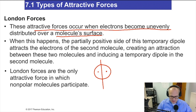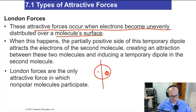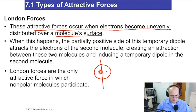Now remember, these electrons here are not stationary — they're constantly moving. This electron is here now; it could be over here in the next second, back down here, over here. They can just be zipping around. You can't even predict where they're going to be — it's going everywhere.